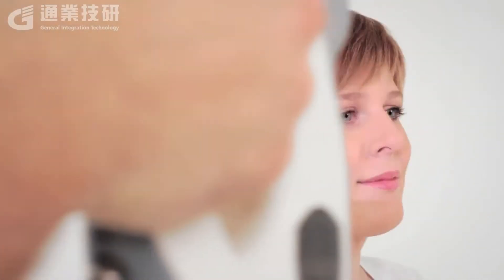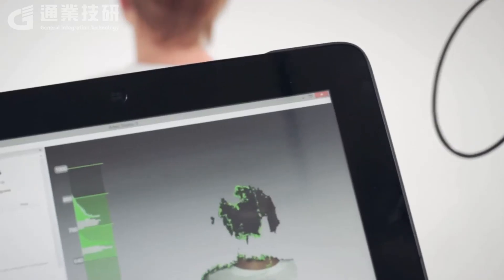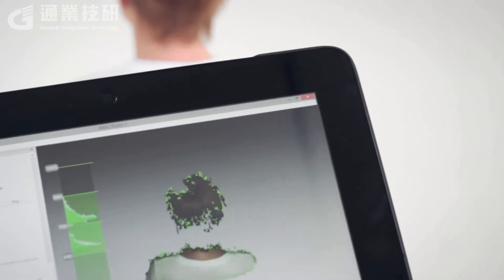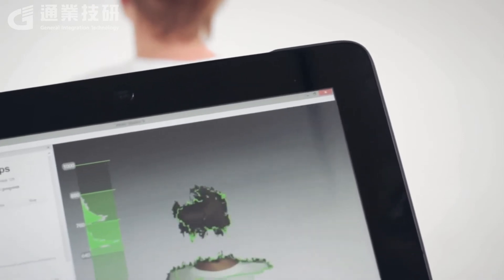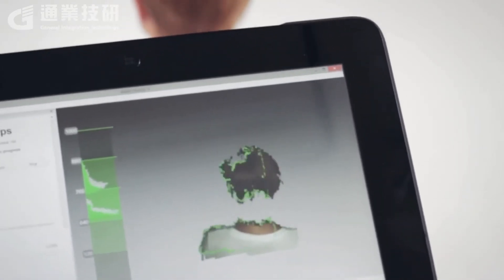Continue to move the scanner around the head, scanning from all angles. Don't forget to scan behind the ears. If the scanner has problems seeing the hair properly, hold it above the difficult spot for longer to accumulate more information. Finish scanning the hair at the same angle at which you started scanning the face.